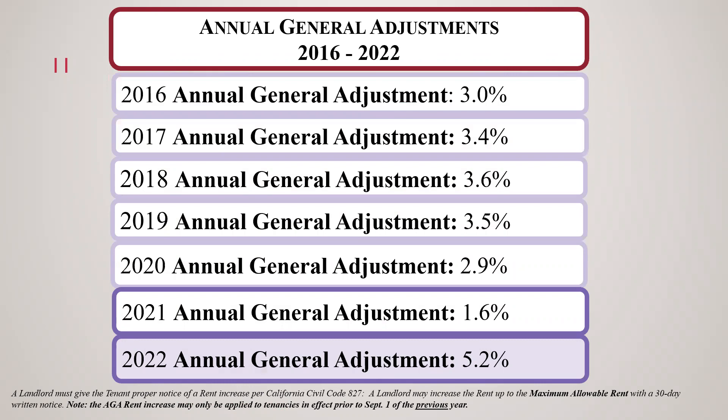This slide shows all of the Annual General Adjustments that landlords have been able to take since the inception of the rent program. The annual general adjustments have generally been around 3%. In 2022, due to increased inflation, the Annual General Adjustment has gone up to 5.2%. Because the Annual General Adjustment is over 5%, landlords are prohibited from banking previous years' increases that they did not take.